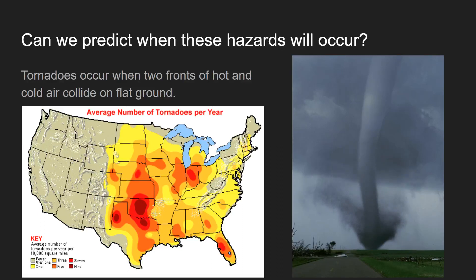Tornadoes occur when two fronts of hot and cold air collide. That happens all the time, but it causes tornadoes when it occurs on flat ground. This map is pretty telling — it shows where all the tornadoes occur per year. The darker red means more tornadoes, so just look at Oklahoma — it experiences more tornadoes than anywhere else in the United States.